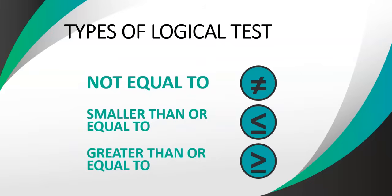Now, if you go look at those symbols on your keyboard, you'll spend a long time trying to find them, because not equal to, greater than or equal to, and smaller than or equal to aren't directly on there. Equal to, greater than, and less than are on the keyboard. For greater than or equal to, you use the greater than symbol followed by the equal to symbol — the way you say it: greater than, equal to. Putting equal to first will cause an error.